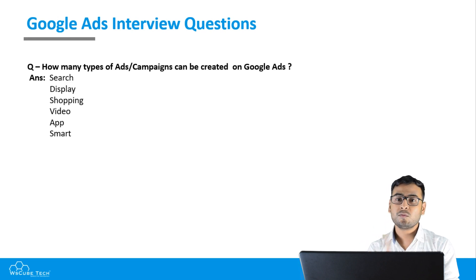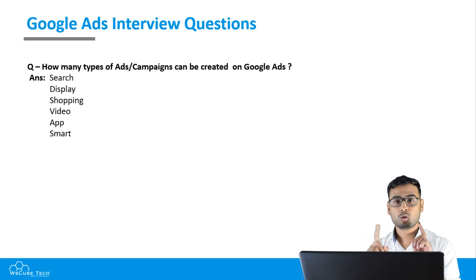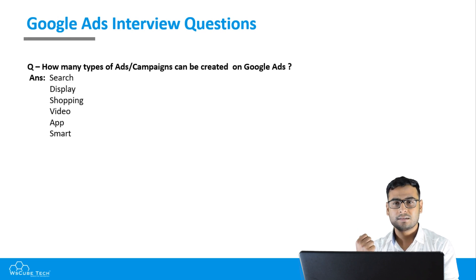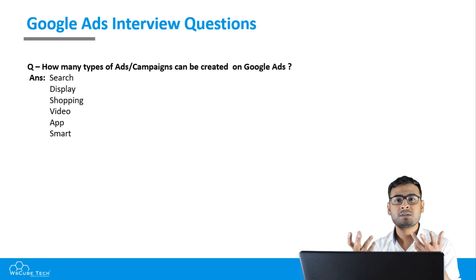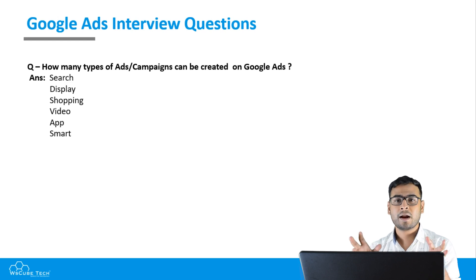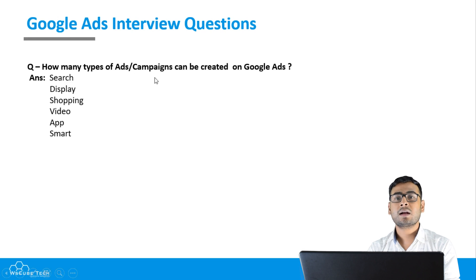An important distinction: types of Google Ads is a different thing from types of campaign objectives. Don't confuse them. Many people go to Google and look at types of ads that can be created, and then think 'website visits' is a type of ad — but website visits is actually a campaign objective, not the type of ad. Types of campaigns and campaign objectives are different things.